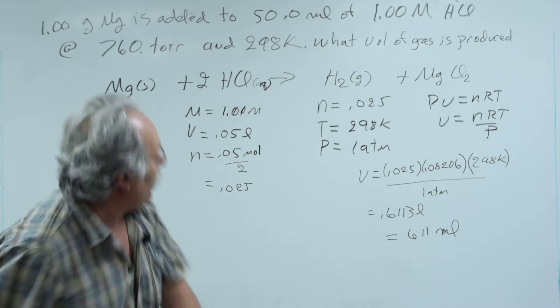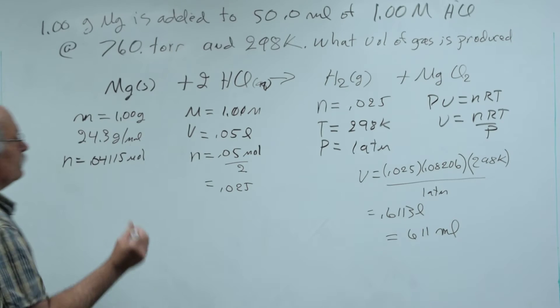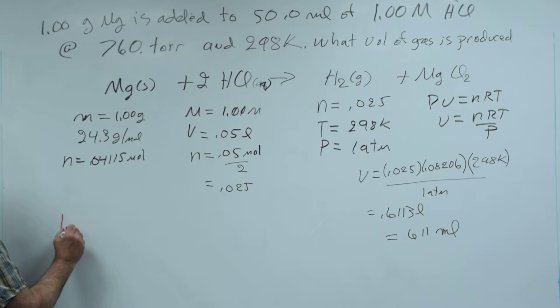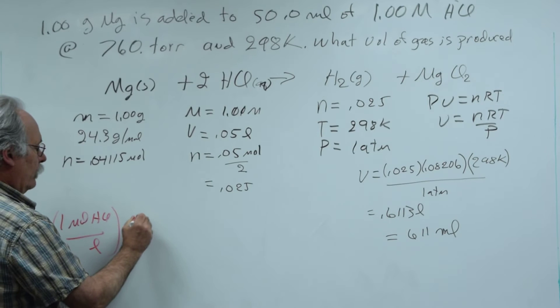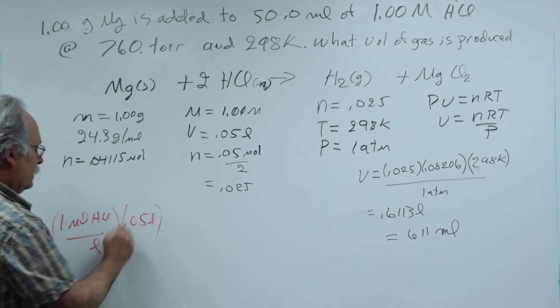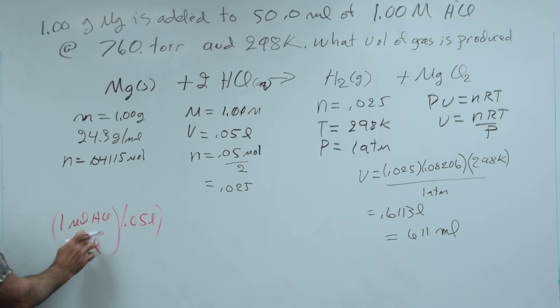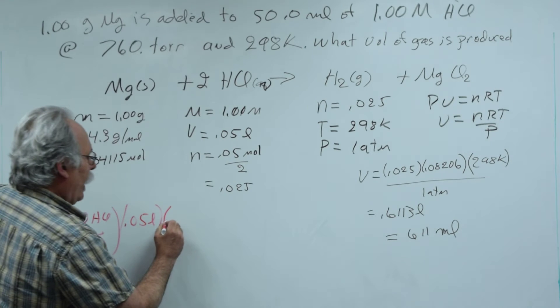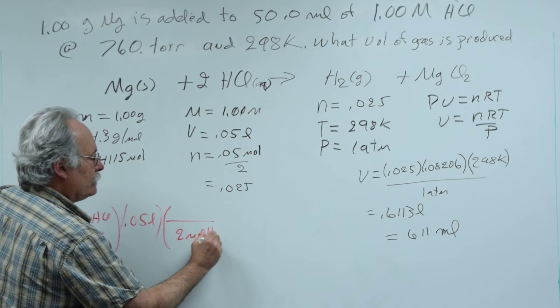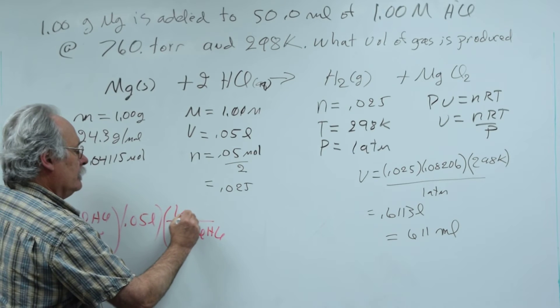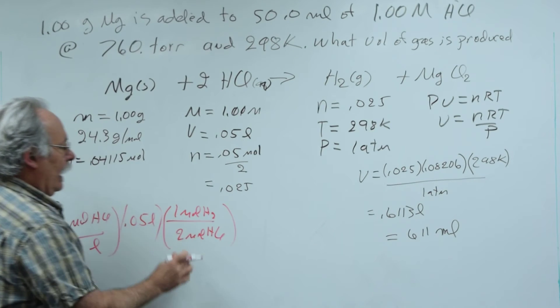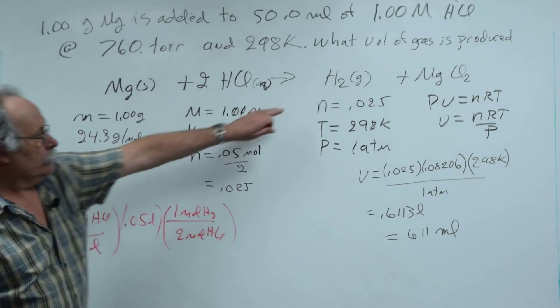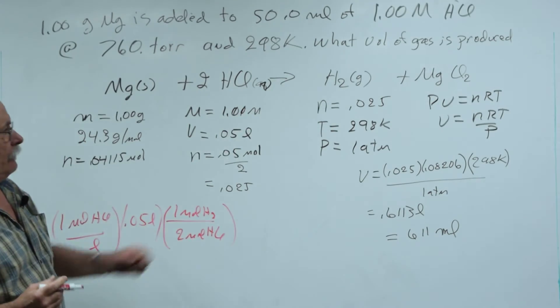And if you didn't follow this step here, what I did was I said that I had my 1 mole of HCl per liter. My molarity, multiplied by the volume, 0.05 liters, and this gives you my moles. 1 times 0.05 is 0.05 moles. Then I had my stoichiometric step. I divided by 2 moles of HCl for every 1 mole of H2, and that gave me the moles H2. And from there, I could go forward.